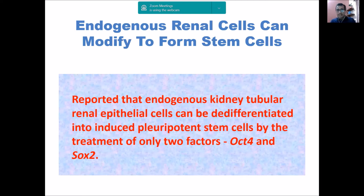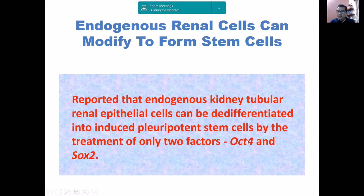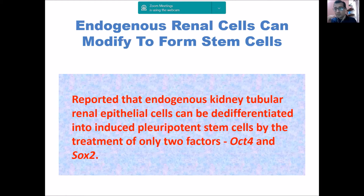Endogenous renal cells: renal epithelial cells can be isolated from the urine of a person. Such tubular epithelial cells can be de-differentiated into pluripotent stem cells — not only fibroblasts but also renal epithelial cells can be reprogrammed to form induced pluripotent stem cells. Interestingly, instead of all four Yamanaka factors, only OCT4 and SOX2 are sometimes sufficient for generating pluripotent stem cells. A clear advantage is that by not activating c-MYC, the chance of generating cancer or tumor cells is reduced.